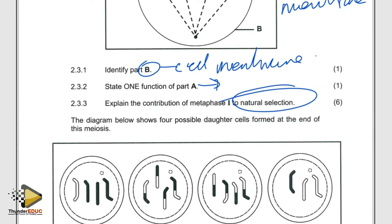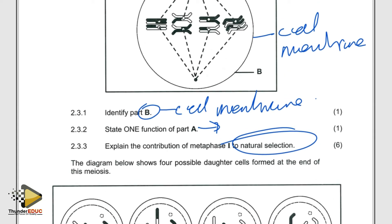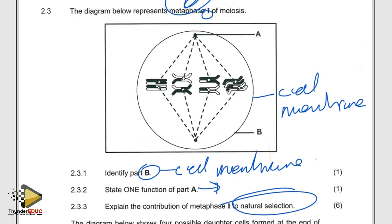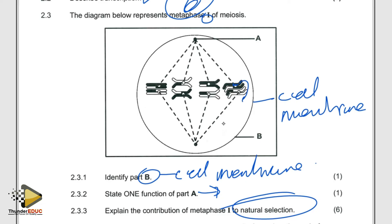Homologous chromosomes align along the equator in homologous pairs randomly. This results in different combinations of chromosomes. For example, if this chromosome is on this side, when it divides it will go this way, and the other will go the other side.